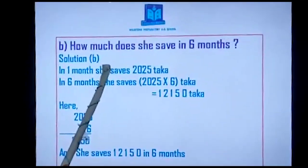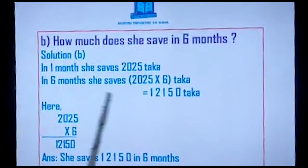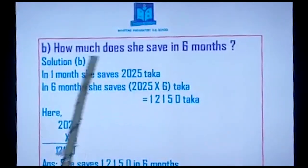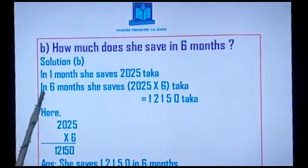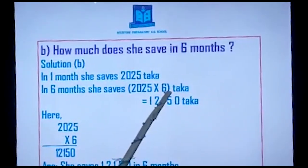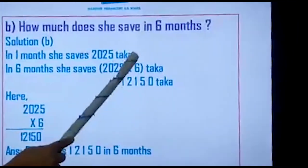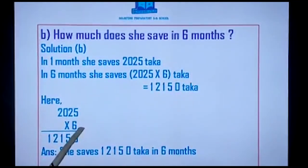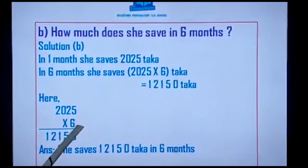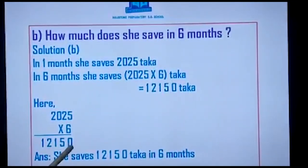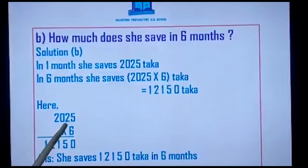So I have written solution B. In one month she saved 2,025 Taka, and now I want to find six months' savings. In six months she saves 2,025 multiplied by 6 Taka. You can show the rough work here because it is a big digit number. Now I am showing you the multiplication. The multiplier is 6. Six fives are thirty — I write zero and carry three.